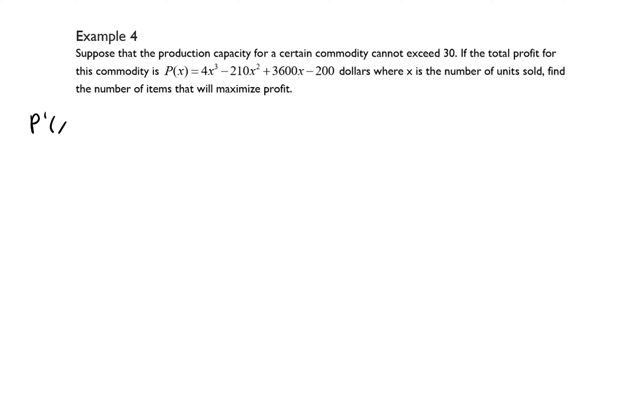First we want to take the derivative of the profit function and we get 12x squared minus 420x plus 3600, and then we want to go ahead and set that equal to zero. All of the coefficients are divisible by 12 so I'm going to factor out a 12 from each of the terms and then set that equal to zero.